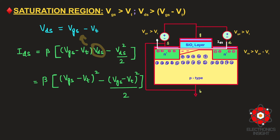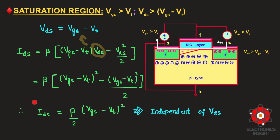After substituting VDS = VGS − VT into the linear region equation, the terms simplify to (1 − 1/2) = 1/2, giving the saturation current: IDS_sat = (β/2) × (VGS − VT)². Notably, there is no VDS term in this equation, confirming that once the channel is pinched off, the drain voltage has no effect on drain current.